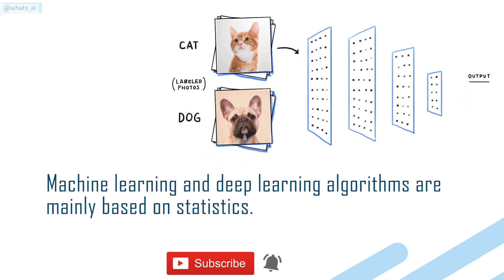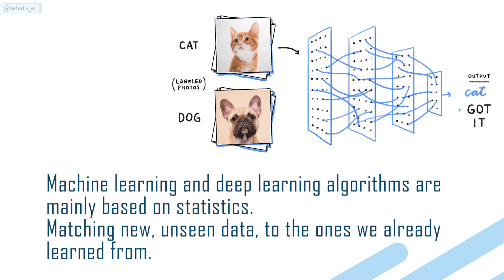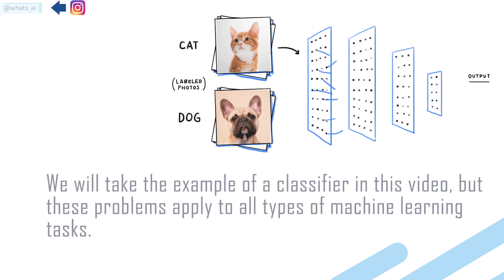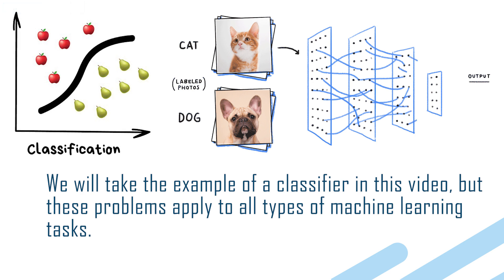Machine learning and deep learning algorithms are mainly based on statistics, matching new unseen data to the ones we already learned from. Which is why there are two typical problems when you train a neural network for a deep learning application. We will take the example of a classifier in this video, but these problems apply to all types of machine learning tasks.